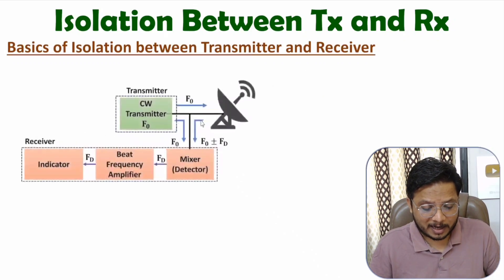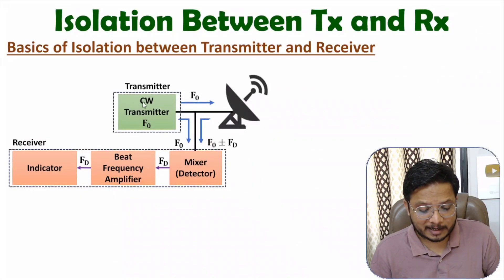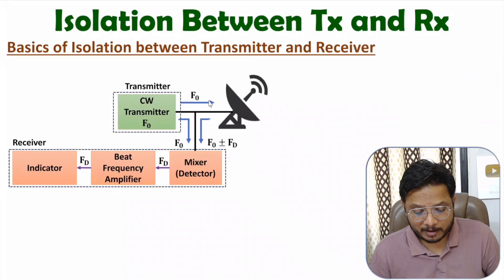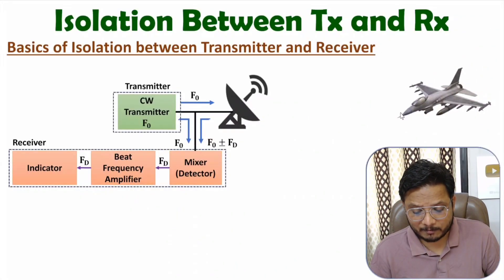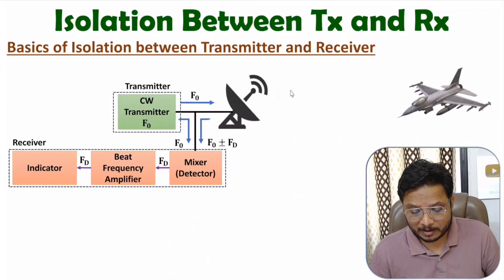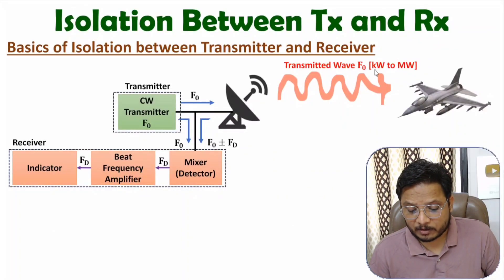In my last video, I explained the CW radar system. With that CW radar block diagram, I did not provide any isolation. Here we have a transmitter generating a continuous wave with frequency F0. If any object is present, there will be reflection towards the antenna. The transmitted signal has frequency F0, and its power is very high — in terms of few kilo volts to mega volts.